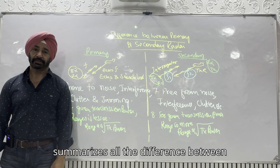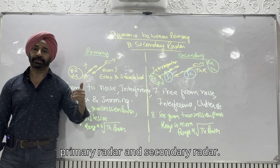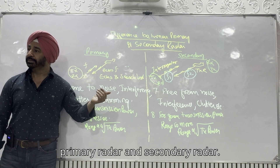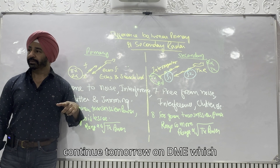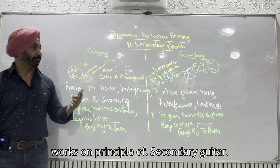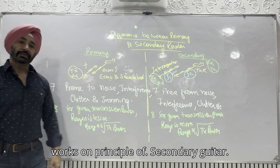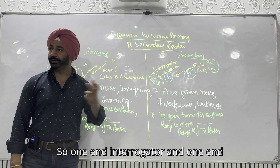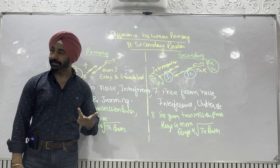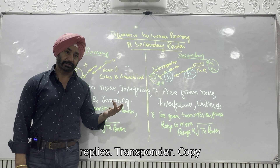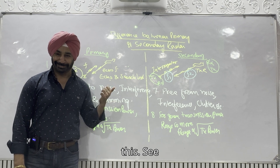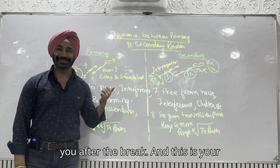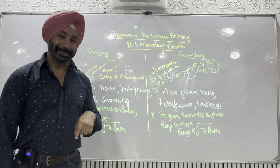That summarizes all the differences between primary radar and secondary radar. We will continue tomorrow on DME, which works on the principle of secondary radar — one end is the interrogator and the other end replies as the transponder. Copy this. See you after the break, and this is your captain speaking.